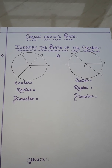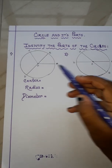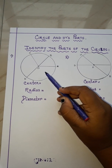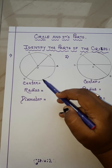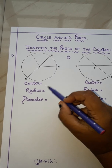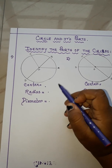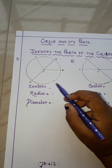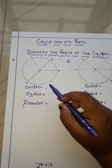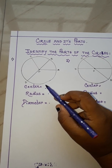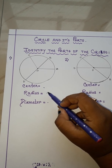So here, identify the parts of the circle. A circle is given to you. You have to find out the center of the circle, the radius of the circle, and the diameter of the circle. You should remember while doing this: in a circle, there is always 1 center.